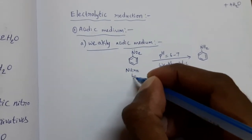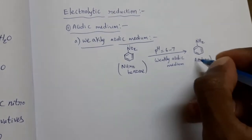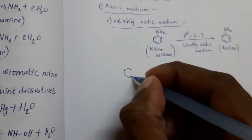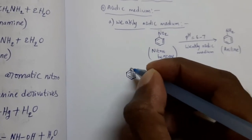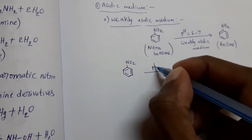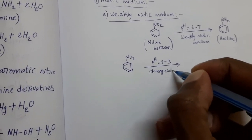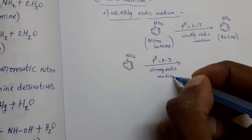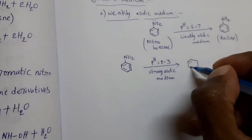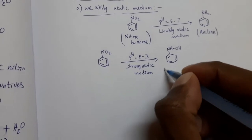In strong acidic condition — pH equal to 2 to 3 — what is the electrolytic reduction product of nitrobenzene? In strong acidic medium, we can get phenylhydroxylamine, C6H5NHOH. This is phenylhydroxylamine.